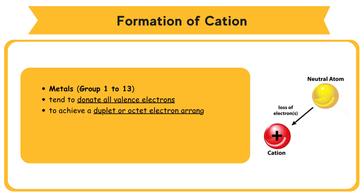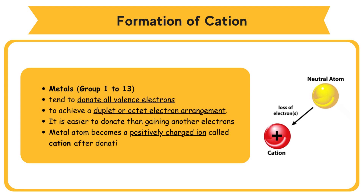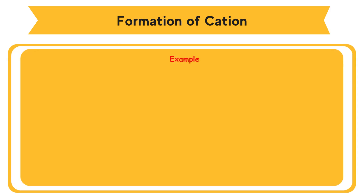It is easier for a metal atom to donate one, two, or three valence electrons than gaining another five, six, or seven electrons to attain a stable electron arrangement. A metal atom becomes a positively charged ion called a cation after donating electrons.